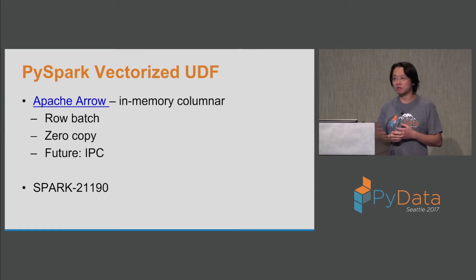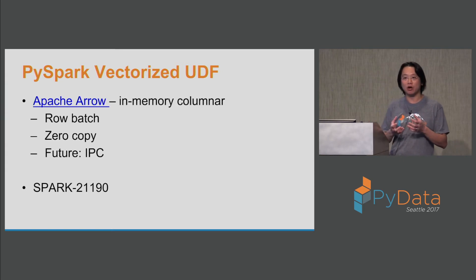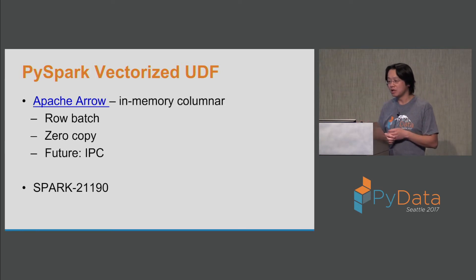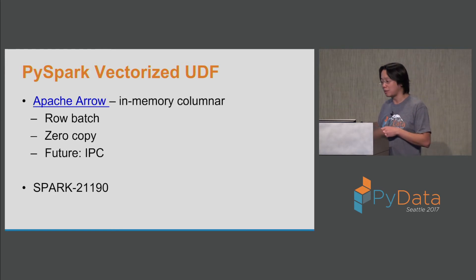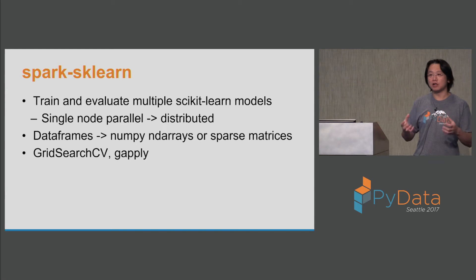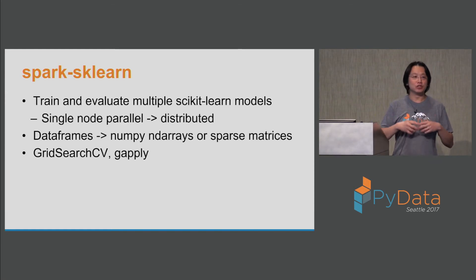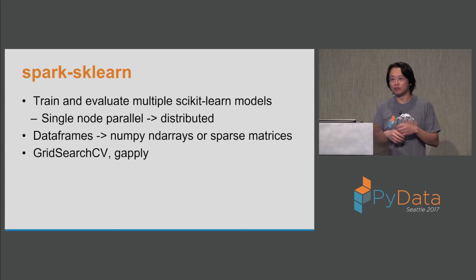The good news is there are several community initiatives to address that overhead. Apache Arrow is an in-memory columnar format — it does the same thing as a row batch, but the batch is exposed directly to native code so you can access the entire batch instead of one row at a time. It does zero-copy and in the future could do IPC, meaning potentially real zero-copy with minimal data movement. There's also a JIRA in Spark about vectorized UDF. This is important as we look at native packages and how we integrate Spark — data transmission will come up time and again.